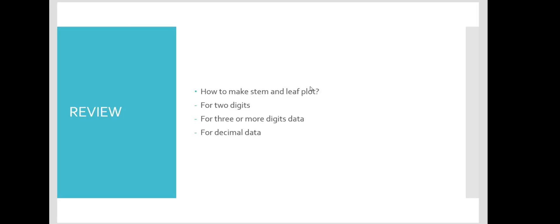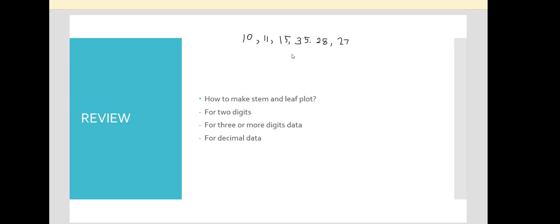So for example, we want to find out how to make a stem and leaf plot given two digits. I'll give a few examples. I have the following data: 10, 11, 15, 35, 28, and 27. I only have very few data right here. What I want to do is make a stem and leaf plot.